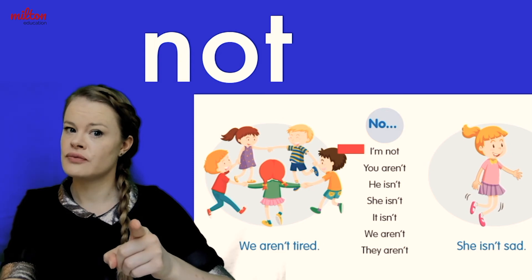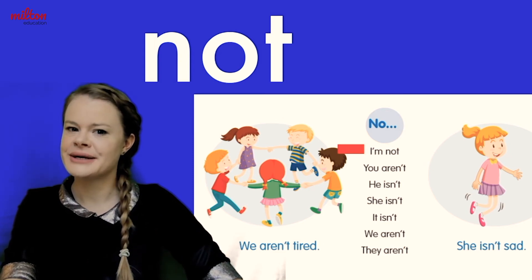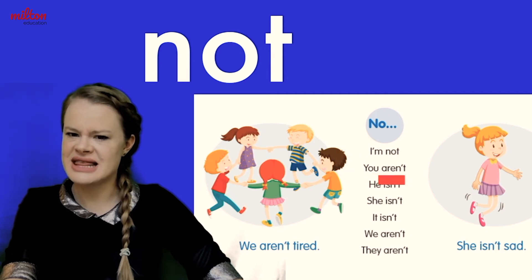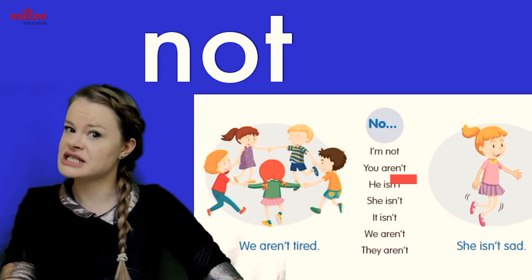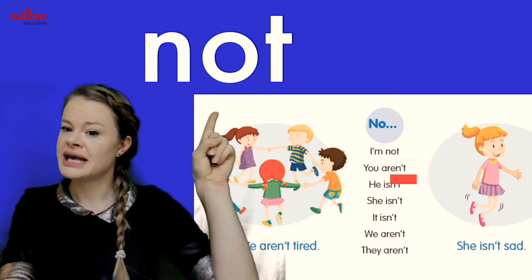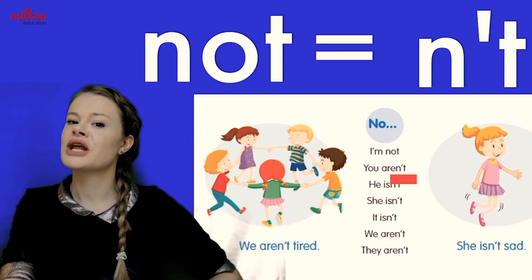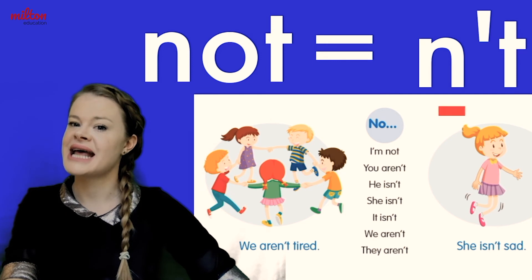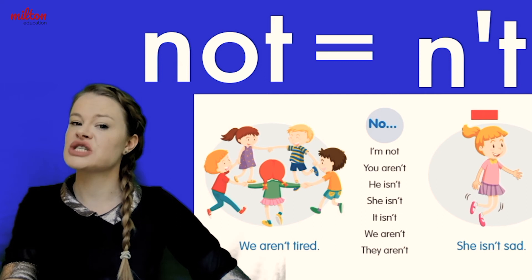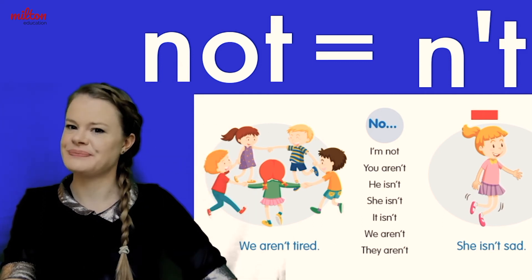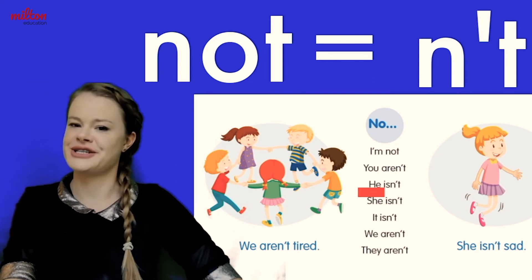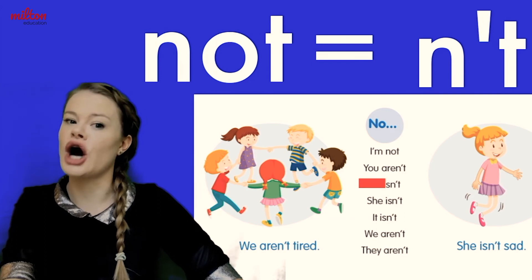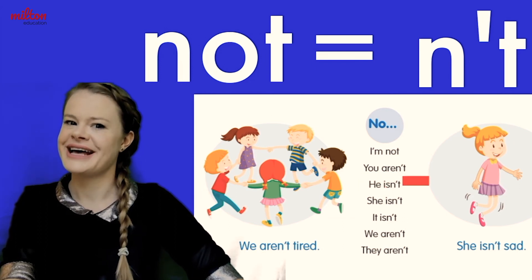What about you? You aren't tired. Hang on a minute — can you see this? There's a funny little line here. That's because the word 'not' is the same as 'n apostrophe t.' That's why we make it shorter. So we can say 'you aren't tired,' and it's the same as 'you are not tired.'